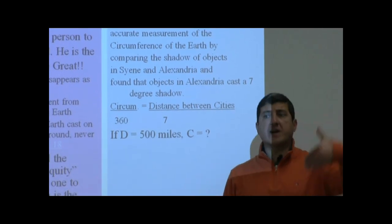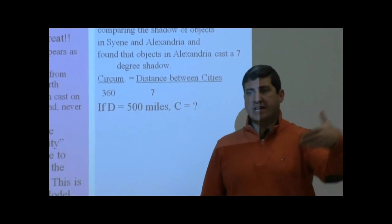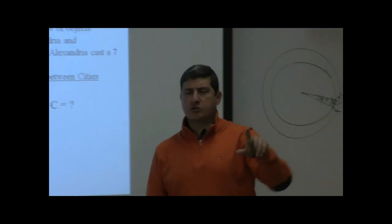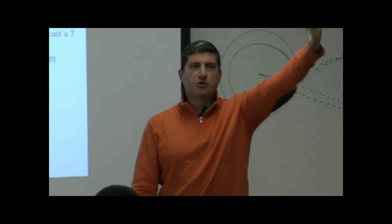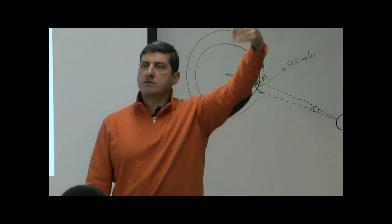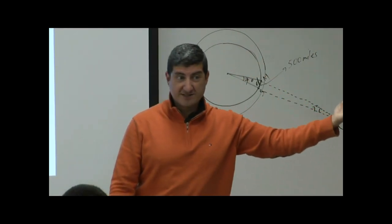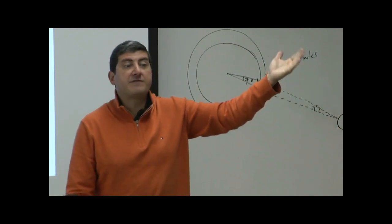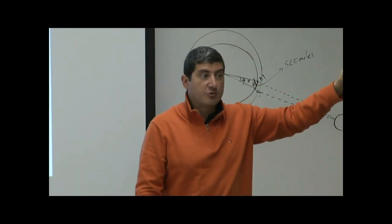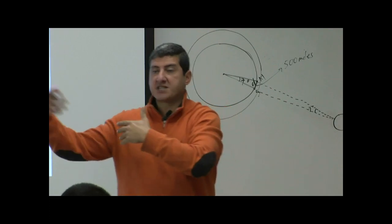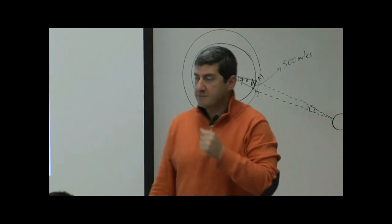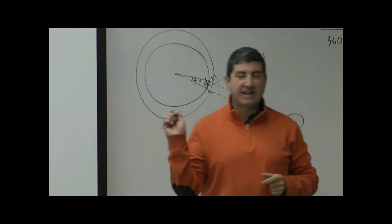He could have also gone to a farther out city. He didn't necessarily have to just go to Alexandria. He could have gone across the Mediterranean, maybe go to Greece. And then another city there, the shadow is going to be even longer, right? It's going to be maybe 15 degrees as you go farther away. Then you could also make a similar ratio.